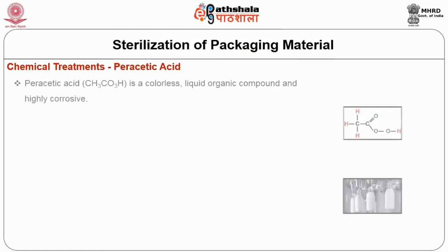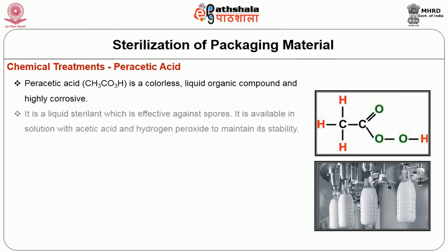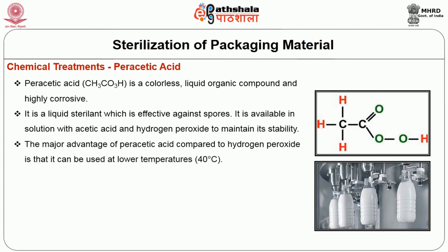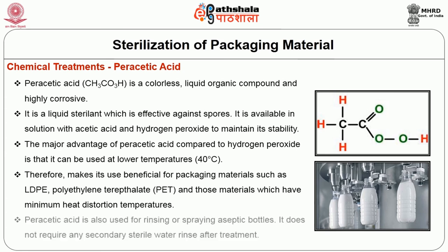The other type of chemical treatment is peracetic acid. Peracetic acid is a colorless, liquid organic compound and highly corrosive. It is a liquid sterilant which is effective against spores. It is available in solution with acetic acid and hydrogen peroxide to maintain its stability. The major advantage of peracetic acid compared to hydrogen peroxide is that it can be used at lower temperatures, making it beneficial for packaging materials such as LDPE, PET and those materials which have minimal heat distortion temperatures. Peracetic acid is also used for rinsing or spraying aseptic bottles, and does not require any secondary sterile water rinse after treatment.